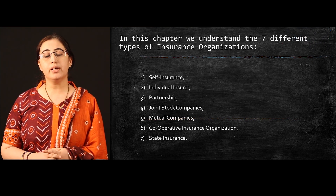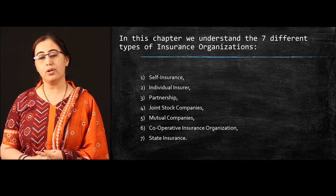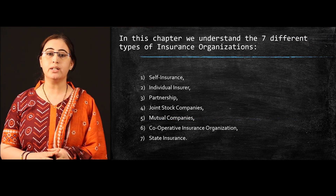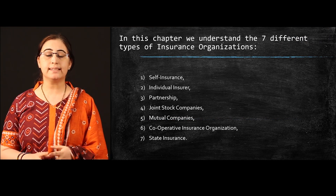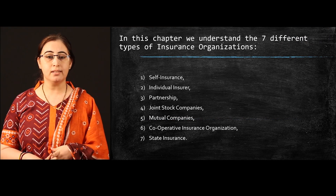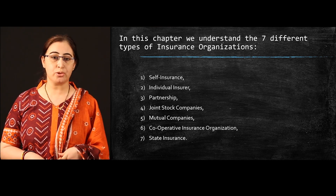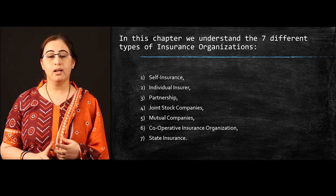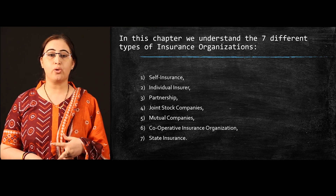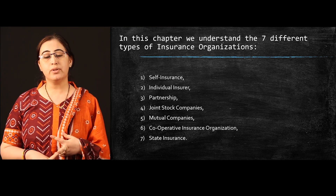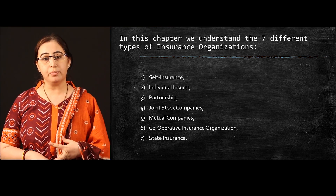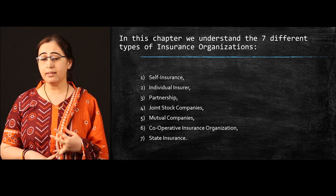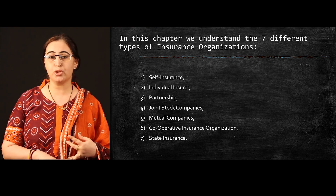Now when we talk about the different types of insurance organization, we basically classify them into 7 different types. The first one is self-insurance, the second one is individual insurance, the third one is partnership insurance, the fourth one is joint stock company, the next one is mutual companies, cooperative insurance organization, and state insurance.